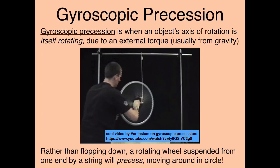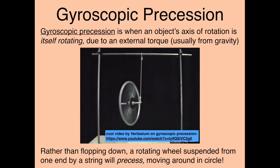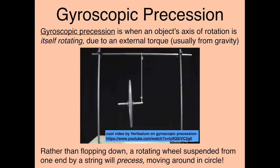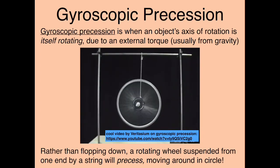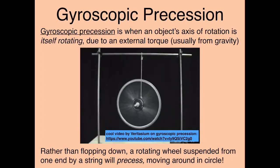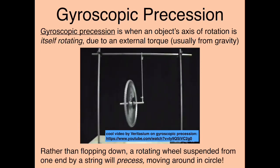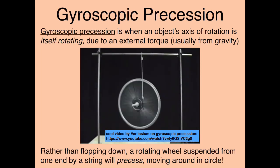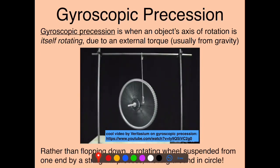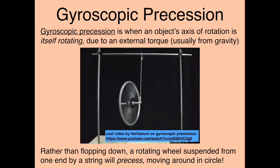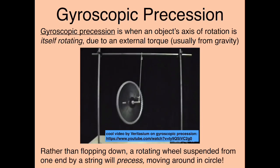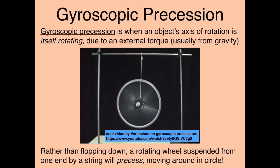Rather than flopping down, the rotating wheel precesses — it moves around in a circle. This is gyroscopic precession: the axis of rotation of the object is itself rotating. The axis traces out a circle due to an external torque, which in this case is from gravity.